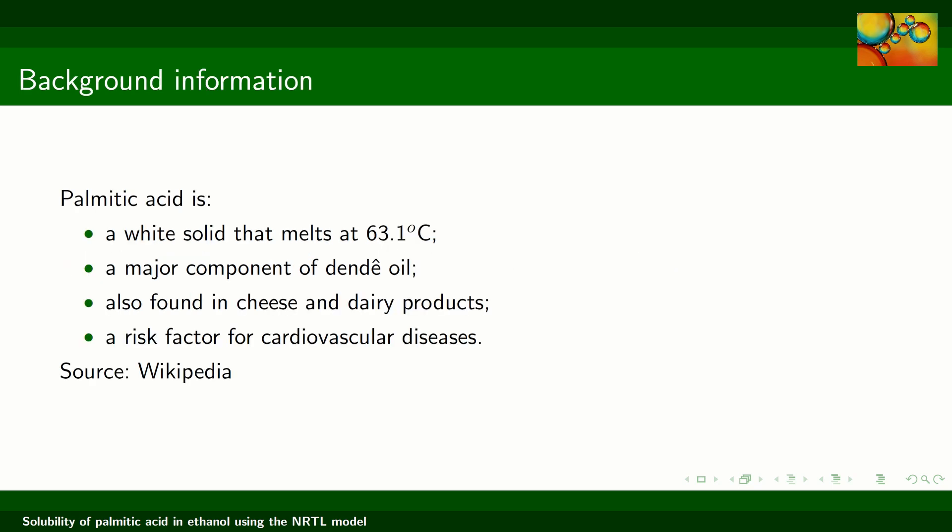Here is some background information about palmitic acid. It's a white solid at room temperature that melts at 63.1 degrees Celsius. It's a major component of palm oil, which is vastly used in Brazil, and it's also found in dairy products. It is considered to be a risk factor for cardiovascular diseases.